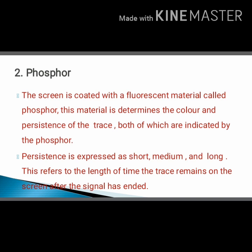The vertical viewing size is 8 centimeters and horizontal is 10 centimeters. The next feature is phosphor. The function of phosphor in CRT is to convert an electrical signal into a visual display. To get a visual display, the viewing screen is coated by phosphor. Phosphor determines two factors in CRT: the first one is color and the second one is persistence of the trace.